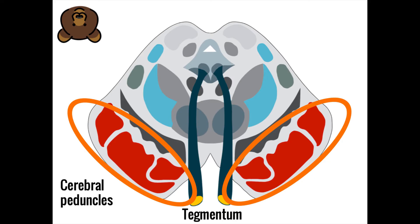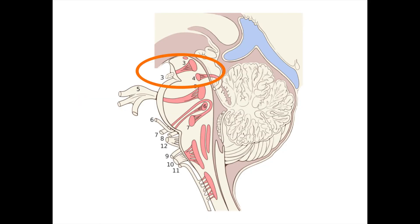The ears of the midbrain, known as the cerebral peduncles, consist largely of motor neurons traveling from the motor cortex to skeletal muscles — known as the corticospinal tract — and to the muscles of the face via the cranial nerves, known as the corticobulbar tract. Two cranial nerves also branch off the midbrain: cranial nerve 3, the oculomotor nerve, and cranial nerve 4, the trochlear nerve, both involved in eye movement.